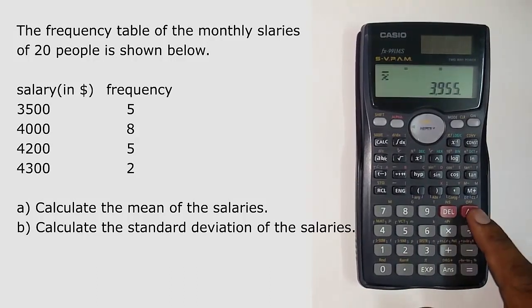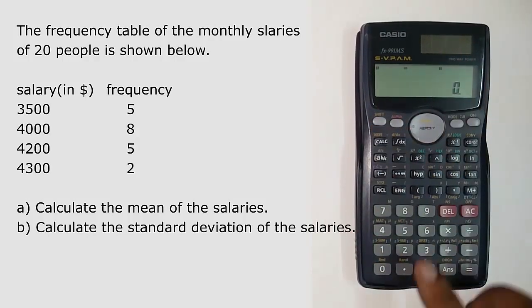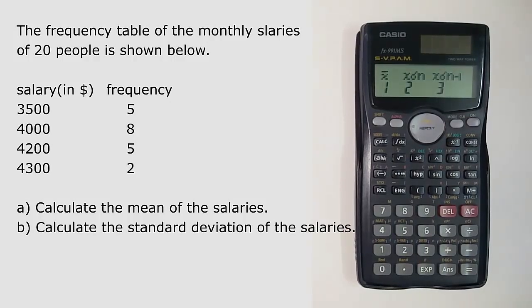Similarly, to check standard deviation of data, click on shift then number 2 button which again brings up the menu. Here the sign x0n denotes standard deviation of the data. Select the number 2 and click equal to to see the value of standard deviation and there you go with standard deviation value again without using your pen or your brains.